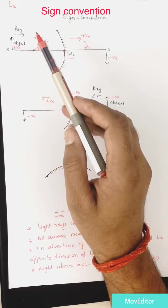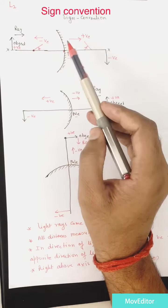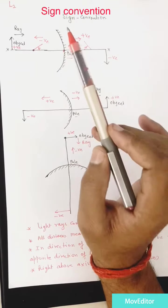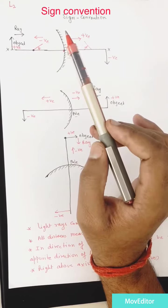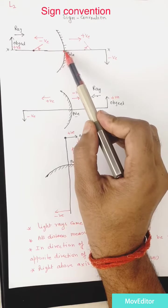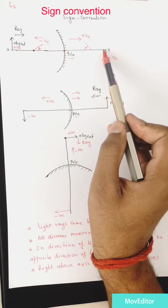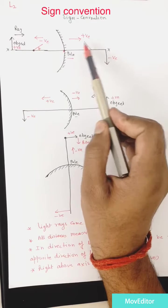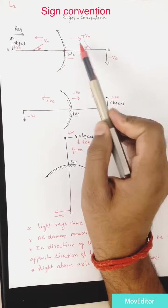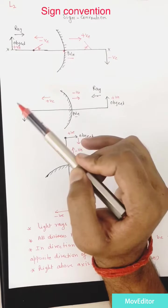First point: light ray always comes from the object. Second point: all distances are measured from the pole of a mirror. Third point: while measuring any distance, if you are moving in the same direction as the light ray, that distance will be positive.